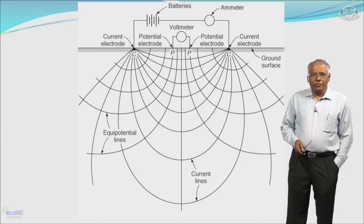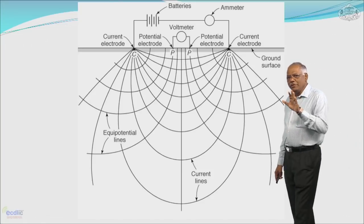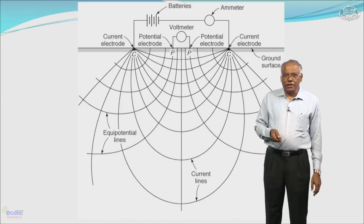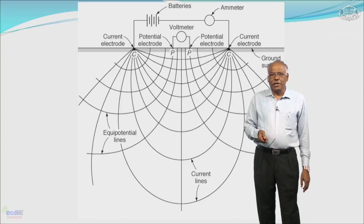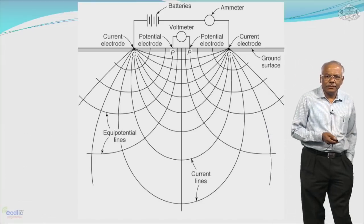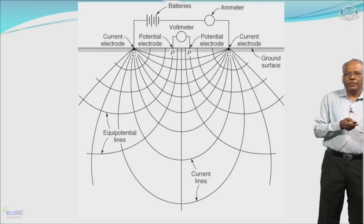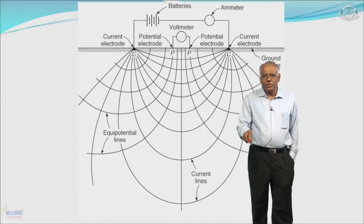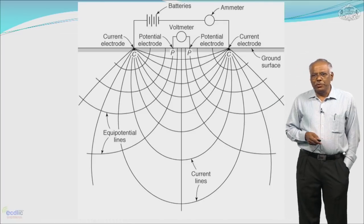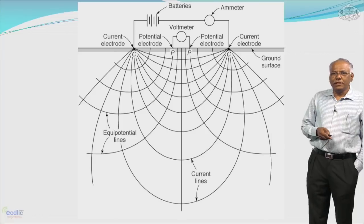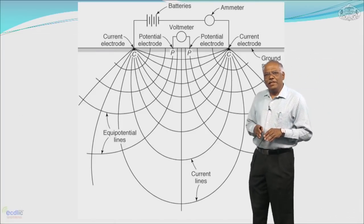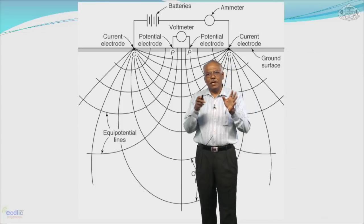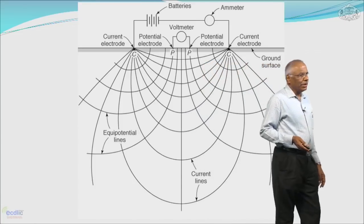In the picture you can see how current lines are produced between C1 and C2, the current electrodes. Equipotential lines are also seen, produced from potential electrodes P1 and P2. You have the voltmeter, ammeter, and battery attached to the setup. This is the typical field setup, along with the subsurface section depicted in the picture. It is very clear that this is how you can actually measure the electrical resistivity of a given subsurface formation.